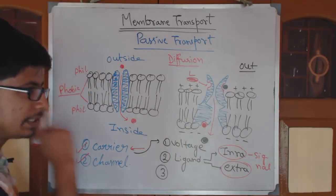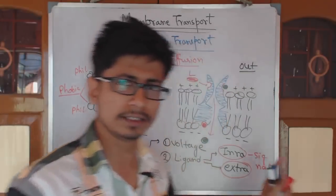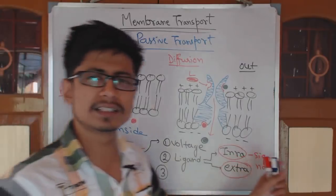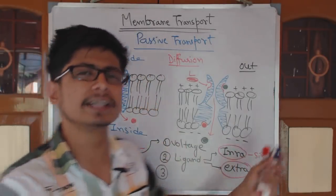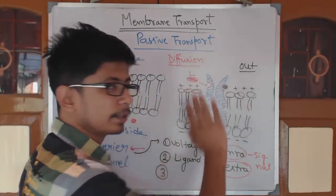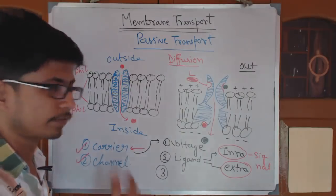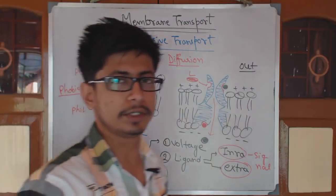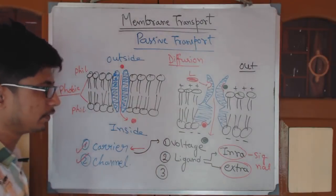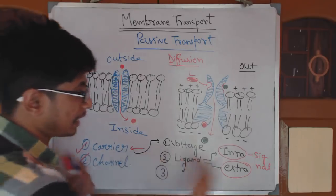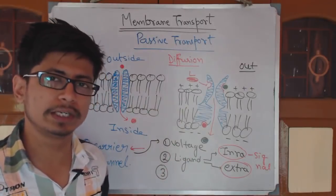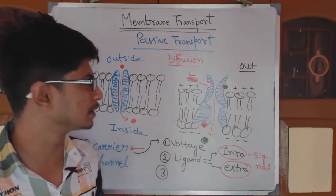These are mainly ion channels — mainly depending on voltage or ligand to uptake some ions from outside or remove some ions from inside to outside. That is why we use this type of channel molecules, and all of them play a vital role in different cases and purposes.